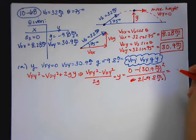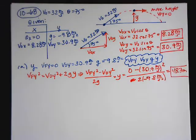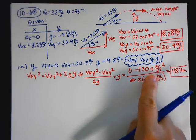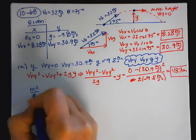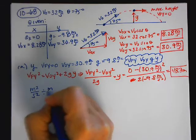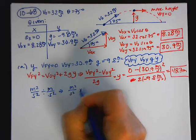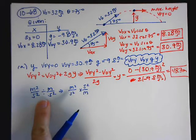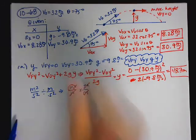Working this out on the calculator, I get 48.7 meters. The great thing about physics is I can check my work by carrying units through: meters per second squared in the numerator gives meter squared per second squared, divided by meter per second squared — that leaves meters. So I didn't make an algebra mistake, and that's a way to check our work.